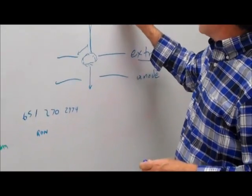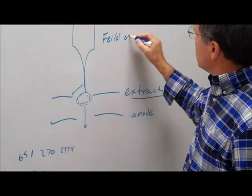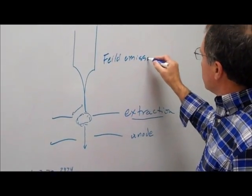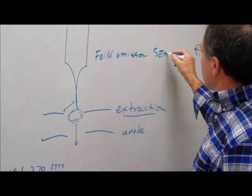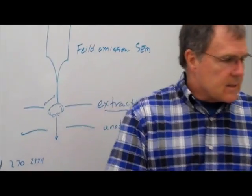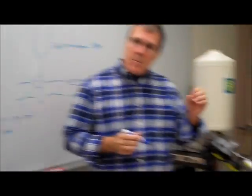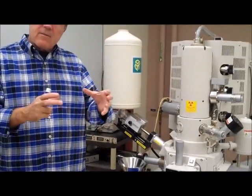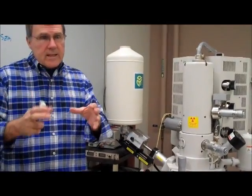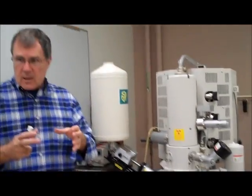And so this one is called a field emission scanning electron microscope. And so it has higher resolution and a very bright beam, and by bright we mean that there's a lot of illumination, in this case when we say illumination we mean electrons.